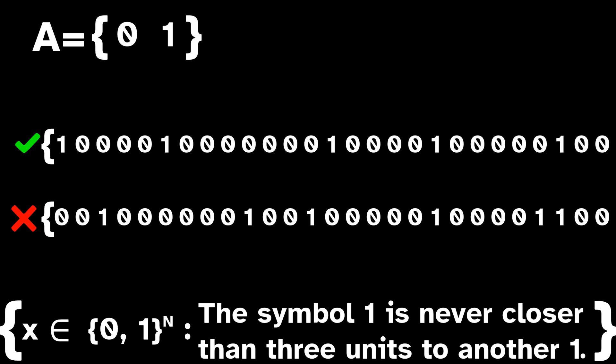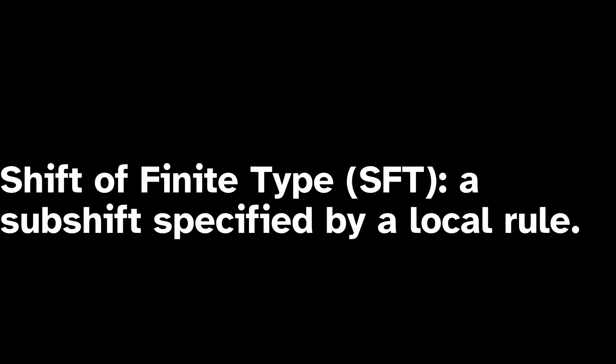A subshift specified by local rule, one verifiable using a window with a finite size, is called a shift of finite type, or SFT. SFTs are some of the most important examples of subshifts because they are very easy to analyze, as a lot of their properties and theorems are much easier to check or prove for SFTs than other general subshifts.